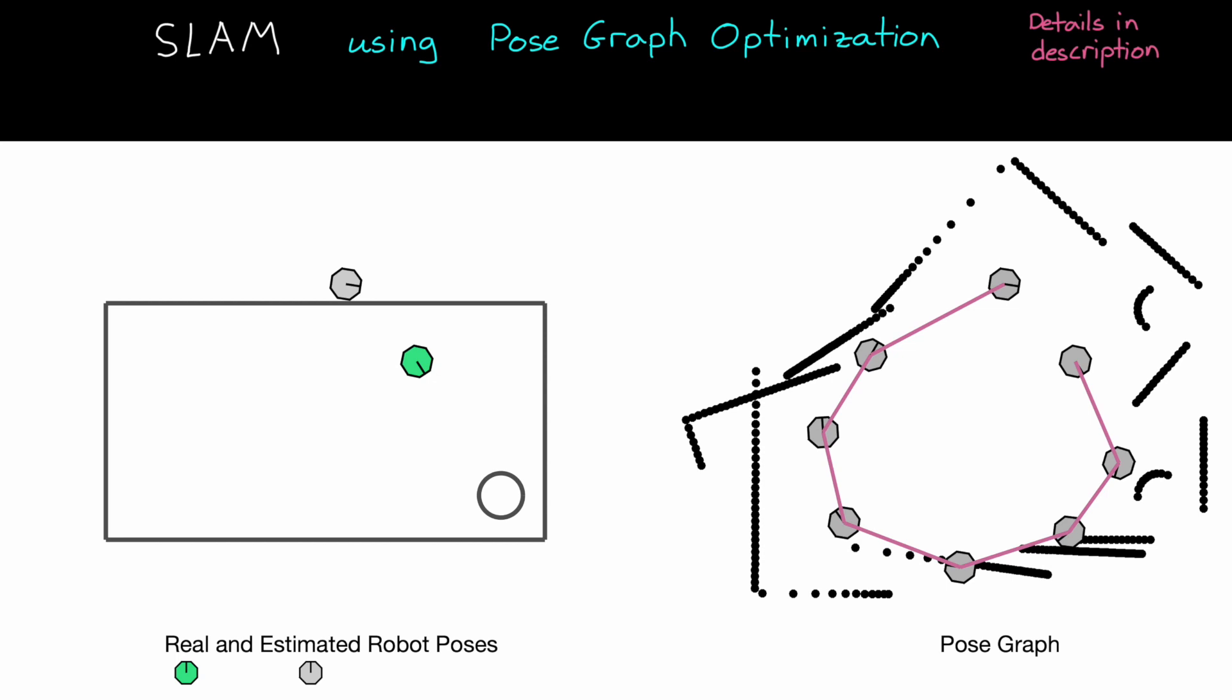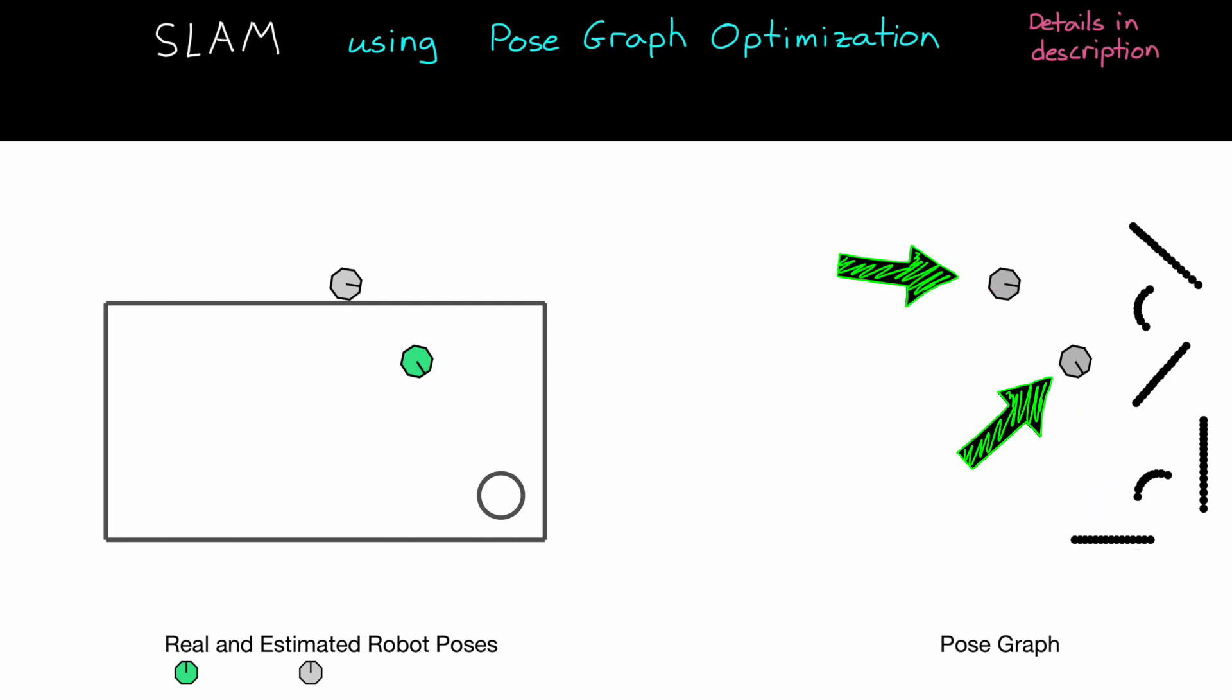We still can't do much with this information because you can imagine that all of the bars are at their nominal length and everything wants to stay right where it is. However, we're at a point where something interesting can happen. Our first pose and the current pose are both observing the same feature in the environment. This means that we can build a new edge, a new constraint, between these two nodes. We just need to understand how these two features align to figure out where the two poses have to be relative to each other. And in this example, they would have to be in the exact same location. So now we can add a new constraint, one that connects the first and last poses together and closes the loop.